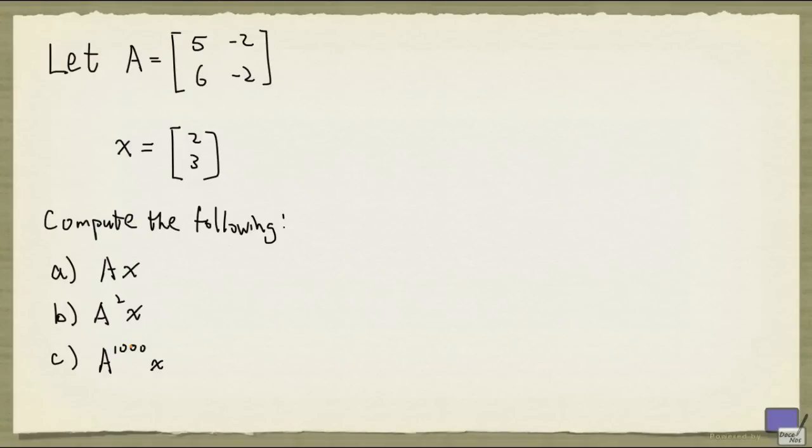So let's see what we can do here. Maybe we can get lucky. So let's first compute A times x. So if we write down A and x, this is what we have.